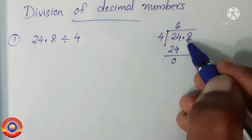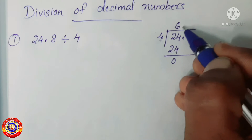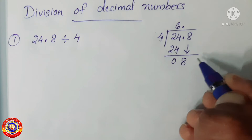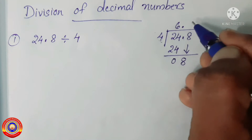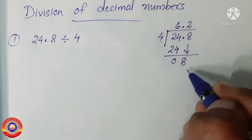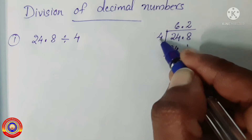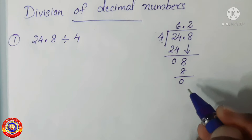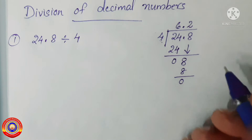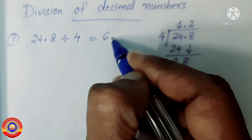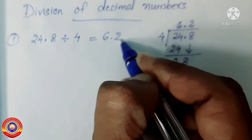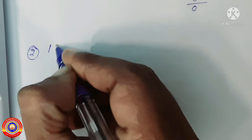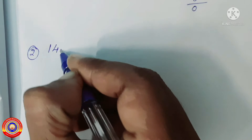Before that, we have to put the decimal point in the quotient. Next, take the number 8. Then 8 divided by 4 is equal to 2. Then 4 into 2 is equal to 8, and 8 minus 8 is equal to 0. Therefore, 24.8 divided by 4 is equal to 6.2.